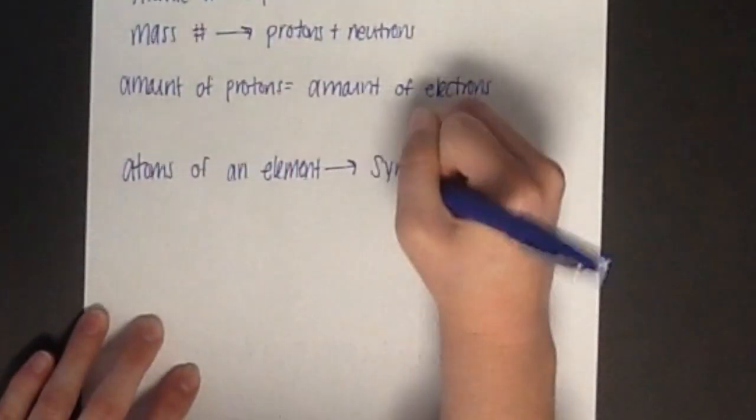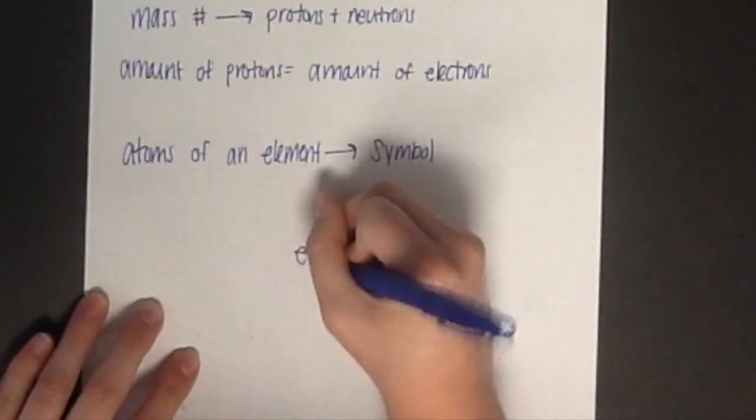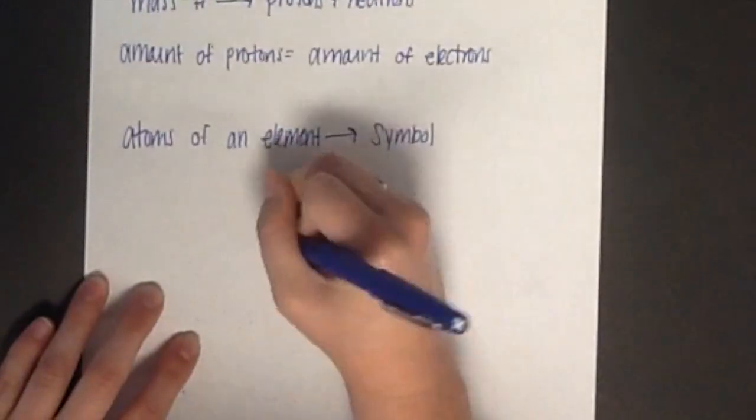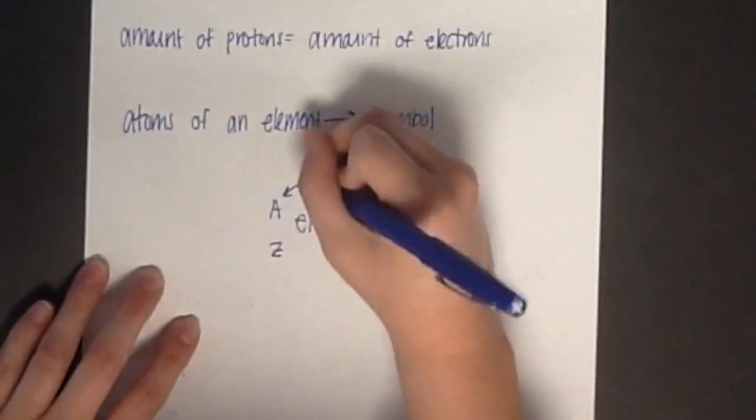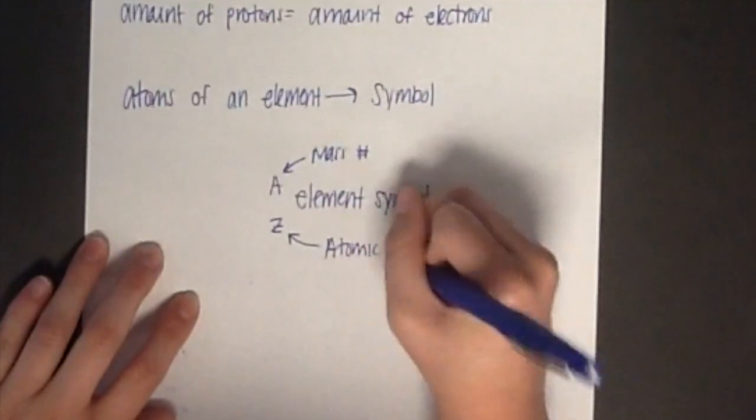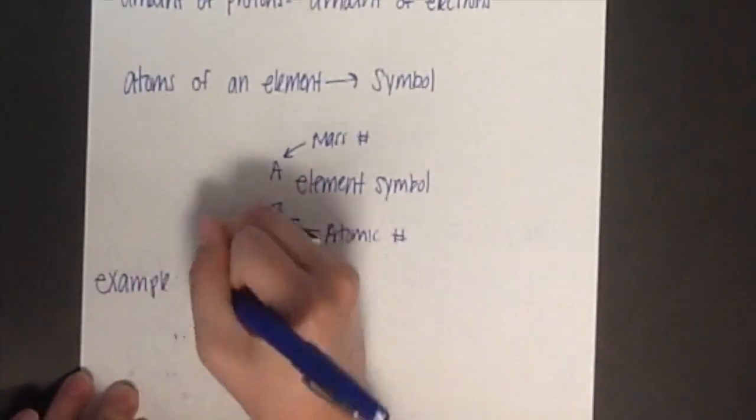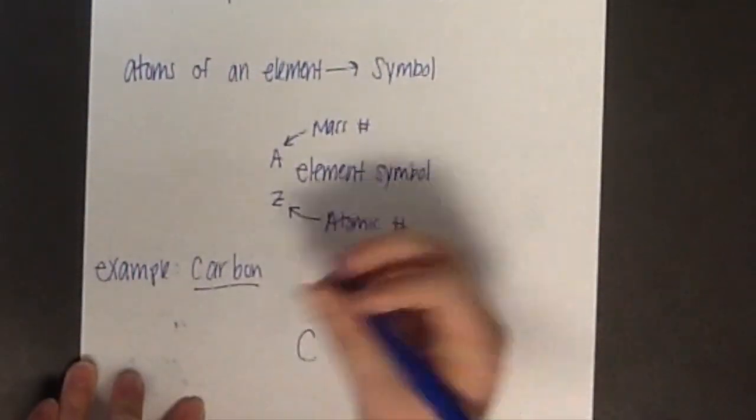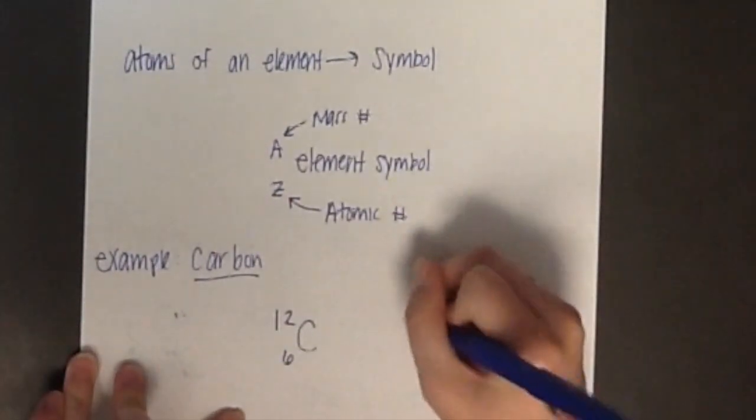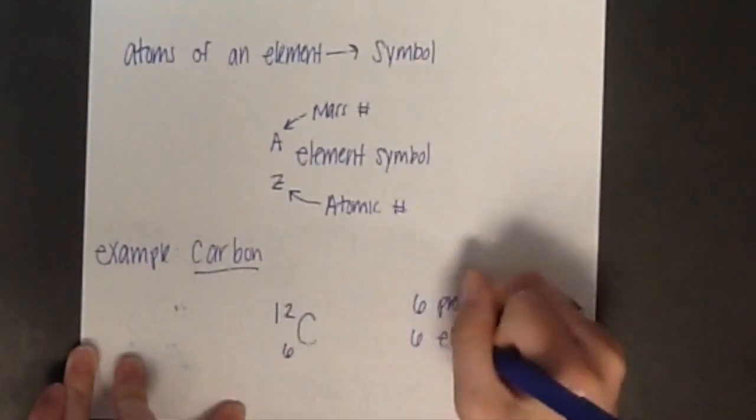Carbon's element symbol is C. Carbon's atomic number is 6, so 6 gets written to the bottom left, and carbon's mass number is 12, so 12 gets written to the top left. This notation shows that there are 6 protons, 6 electrons, and 6 neutrons. This is the correct notation for carbon.